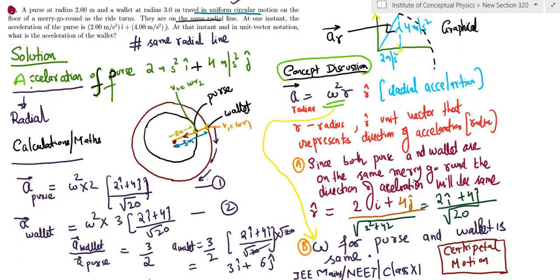Now see, it's a circular motion and therefore the acceleration is always directed radially. So whether it is a purse or whether it is a wallet, the acceleration is towards the center, which is radial acceleration. So the vector notation of both the acceleration of the purse and that of the wallet will be the same because the direction is the same.